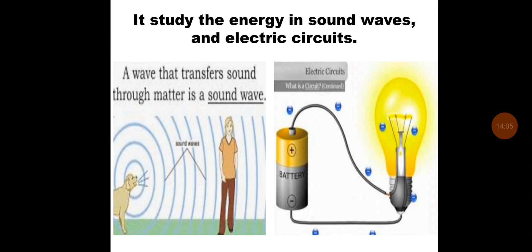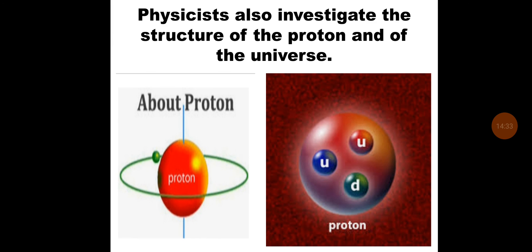Physicists investigate the motions of electrons and the rockets. How the electrons move in their fixed orbit and how the rockets move, it is all due to physics. Physicists also study the energy in sound waves. A wave that transfers sound through matter is a sound wave. It is physics in which we study about the sound wave and the electric circuits. The physicists also investigate about the structure of proton and of the universe, that how the protons are present in the nucleus. These all are the different discoveries which are possible due to physics.